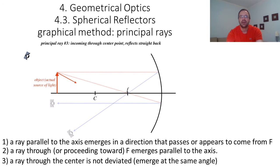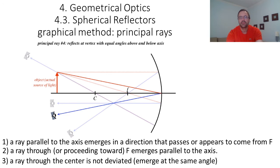Finally, a ray through the center is not deviated and emerges at the same angle. In fact, you only need two rays to find the location of the image, and we already have three. But for mirrors, there is even a fourth principal ray, which is a ray going at the vertex of the mirror, and such a ray is reflected with equal angles above and below the axis.